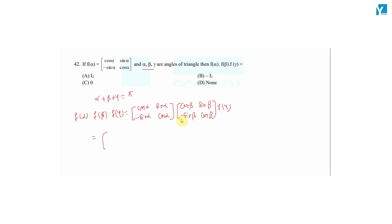For the top-left element: cos α · cos β - sin α · sin β = cos(α + β). For the top-right element: cos α · sin β + sin α · cos β, which is sin α cos β + cos α sin β, giving us sin(α + β).